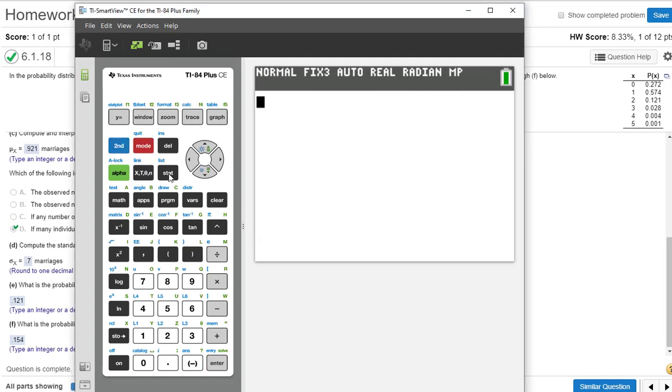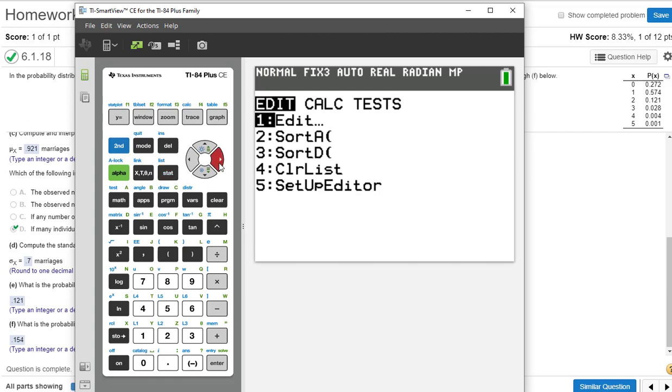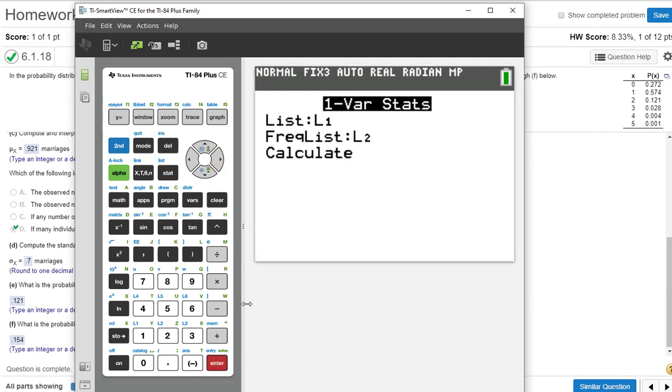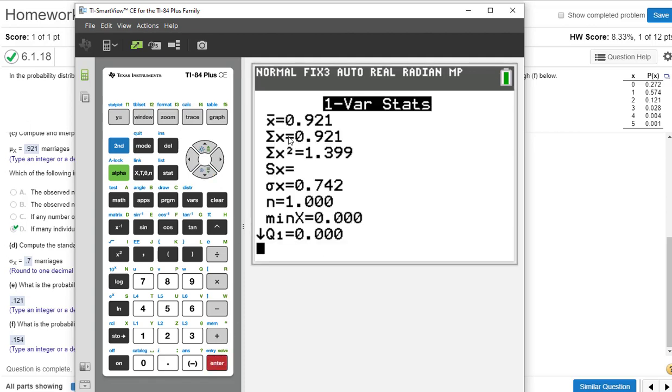Okay, and then we're going to go to stat, calc, one variable statistic, list L1, frequency list needs to be L2. And then press calculate. If you don't get that menu, just put L1, L2, and then press enter. So there's our mean at 0.921, and notice there's our standard deviation, 0.742. So I hope that helps.